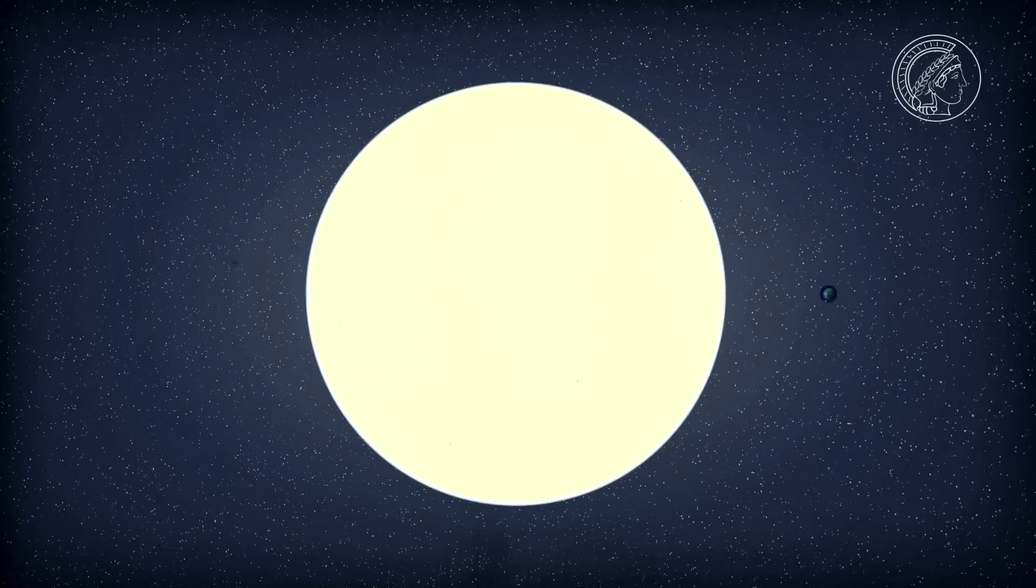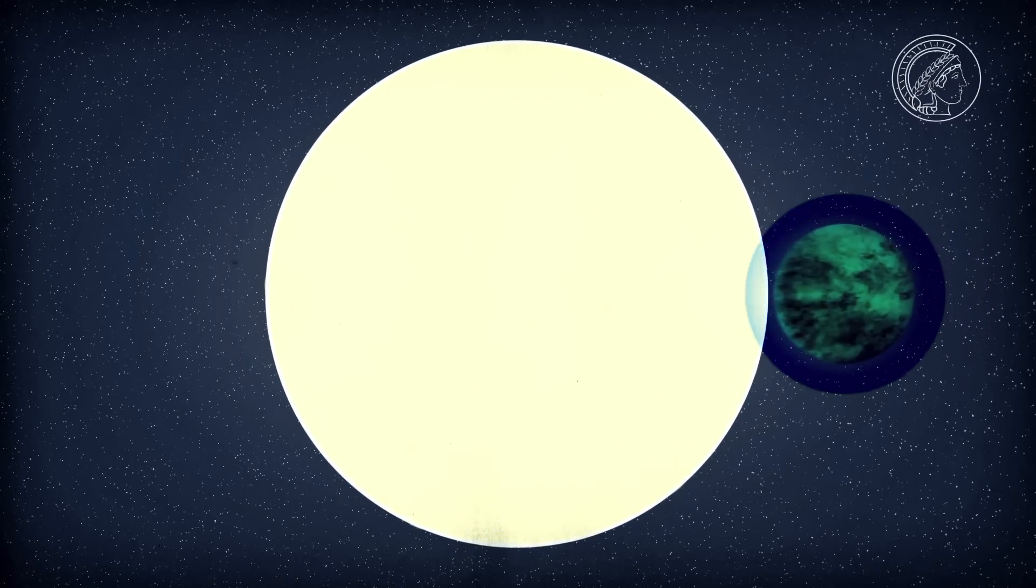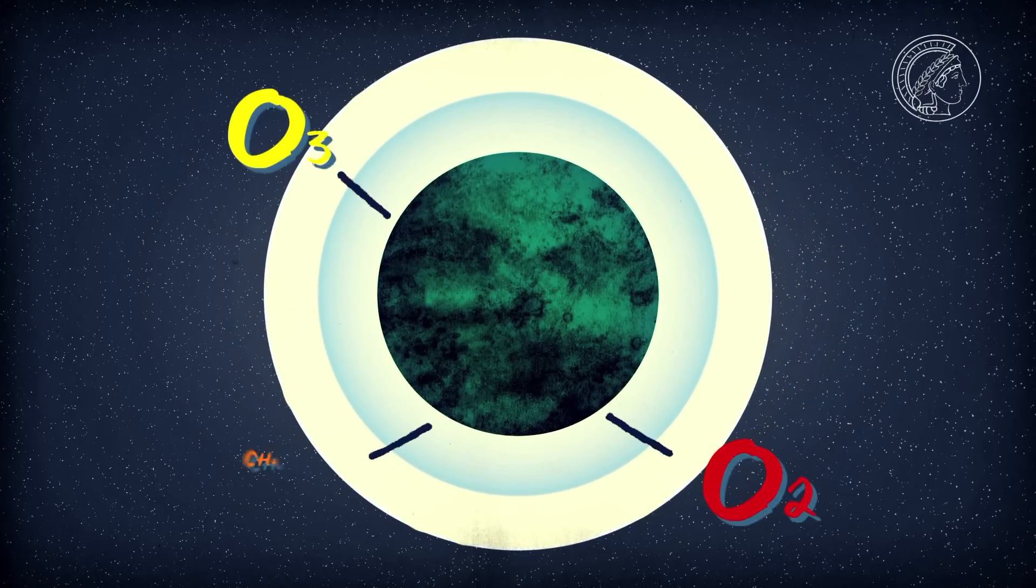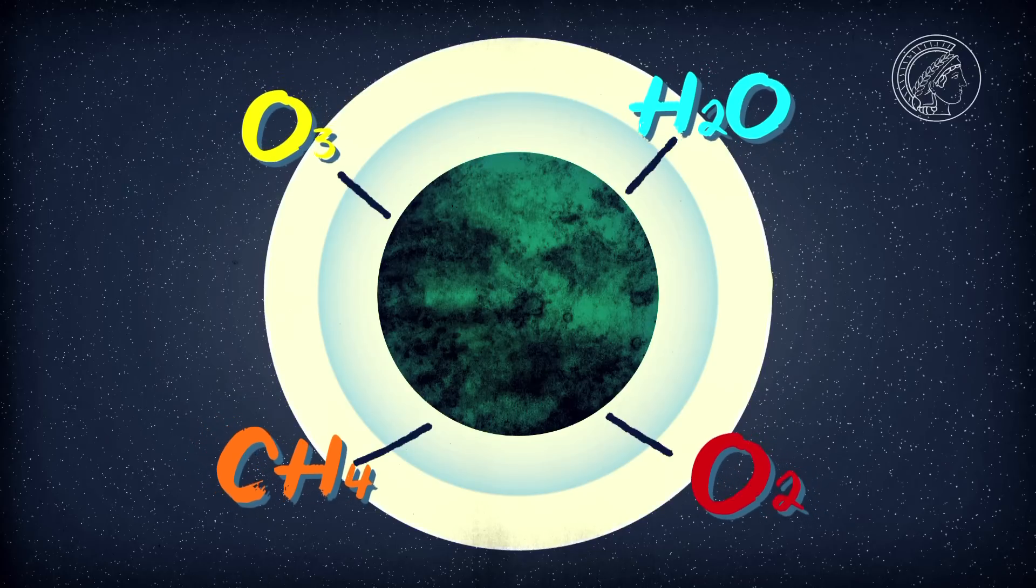It functions like this: if a planet passes in front of its parent star, the light shines through its atmosphere. If there is life there, then oxygen, ozone, methane, and water would need to be in the planet's air - the biomarkers of life.